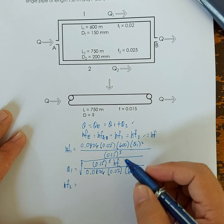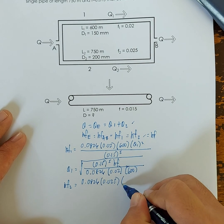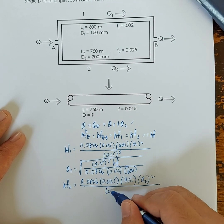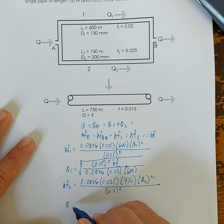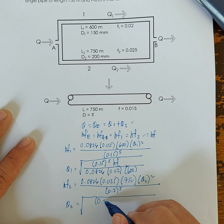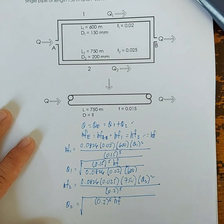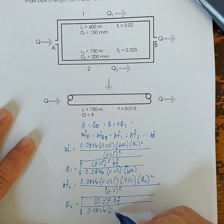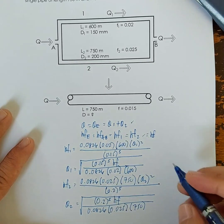Similarly, HF2 equals 0.0826 times F2 (0.025) times L2 (750 m) times Q2 squared, all over D2 (0.2 m) raised to the 5th power. Rearranging, Q2 equals the square root of (0.2 raised to the 5th power times HF), divided by (0.0826 times 0.025 times 750).